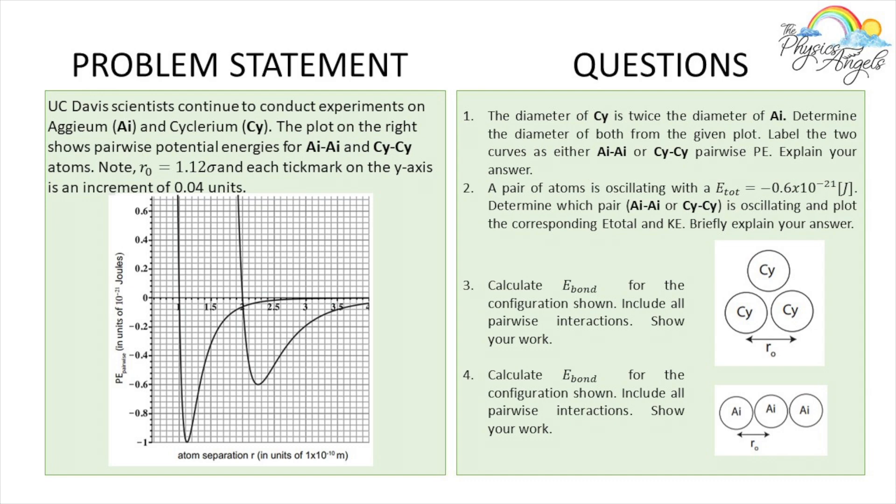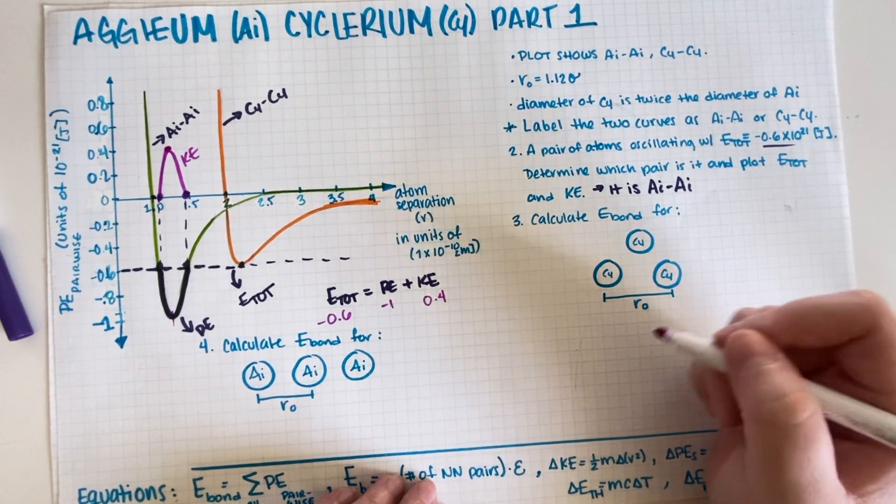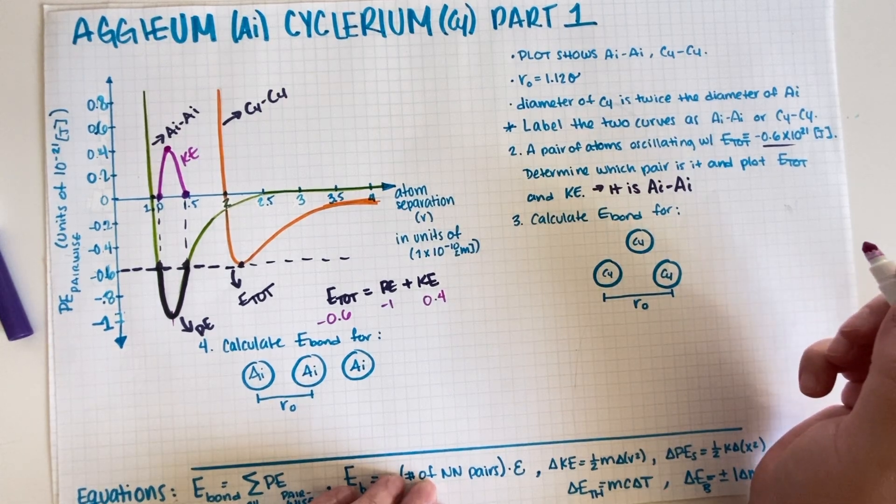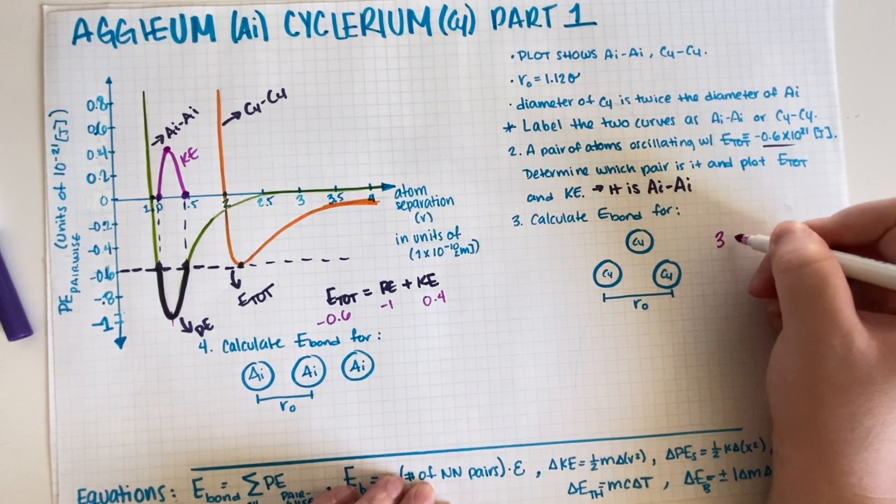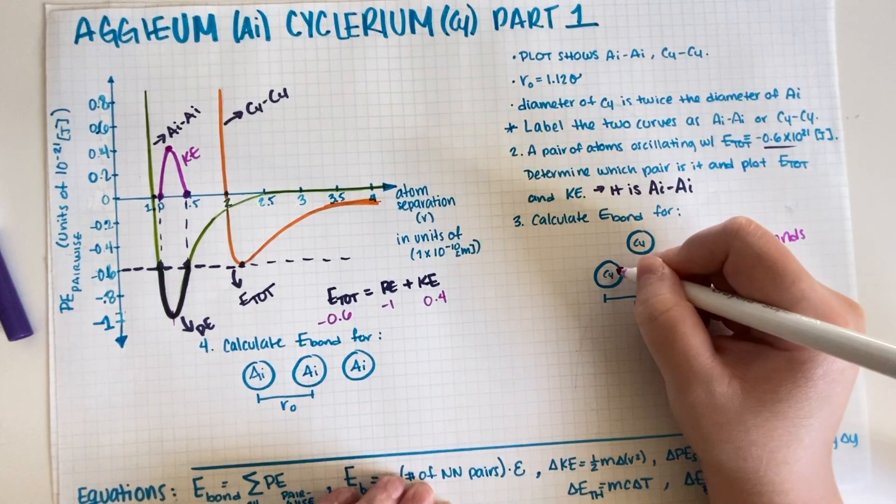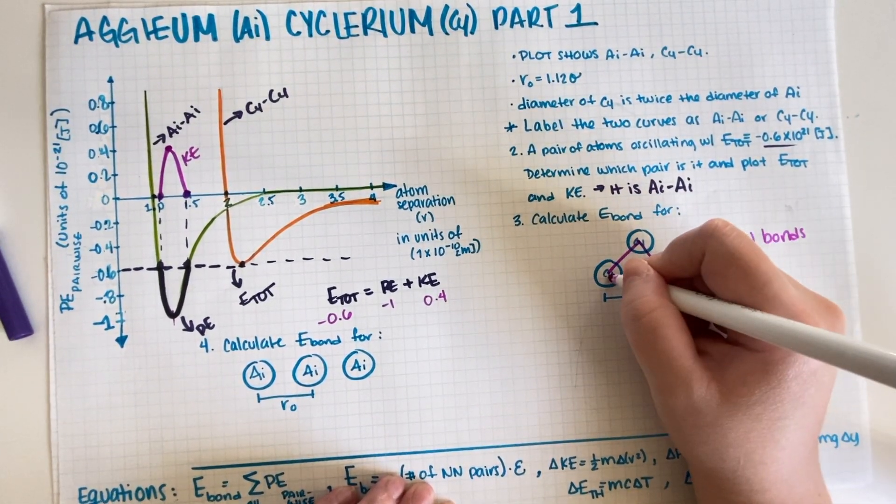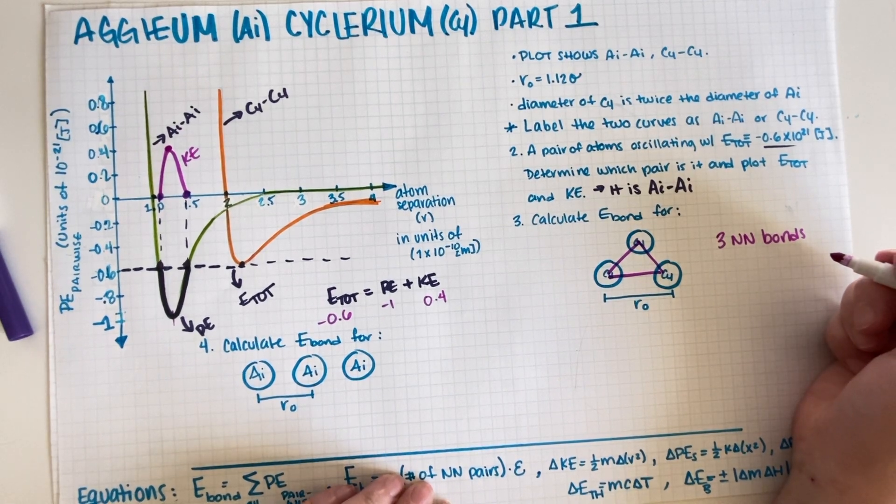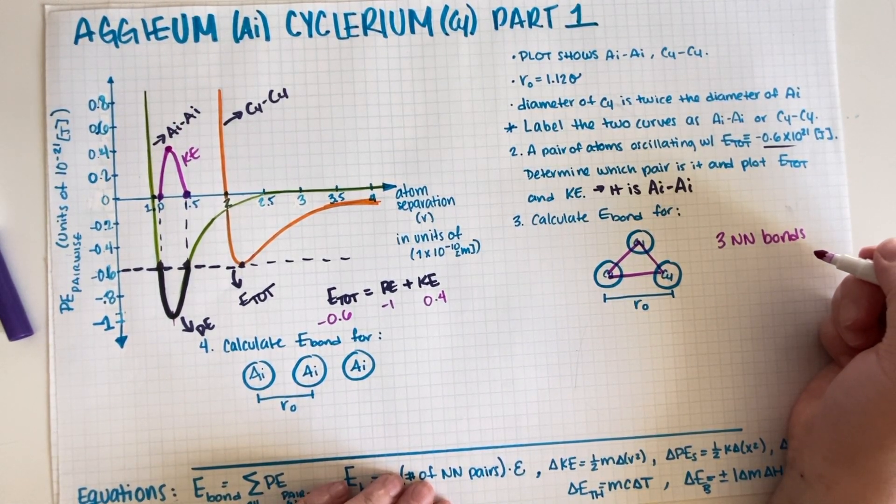So let's do number three first. So we have r₀ here. For this configuration, how many pairs do we have? We have three nearest neighbor bonds - this one, this one, and this one. So this is three nearest neighbor bonds.